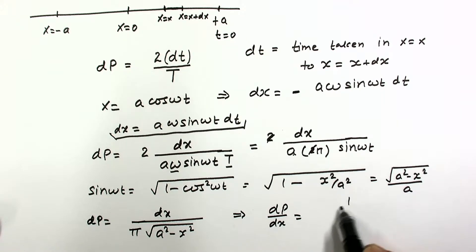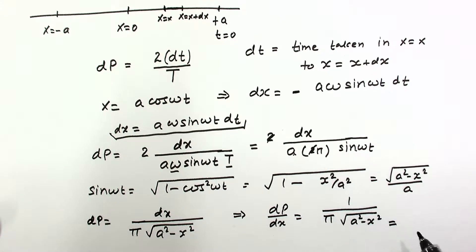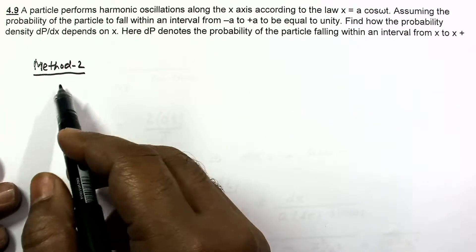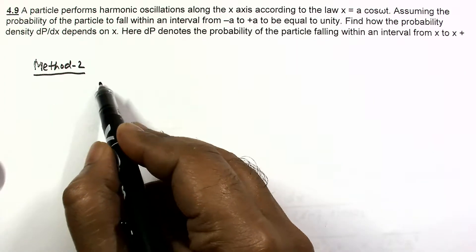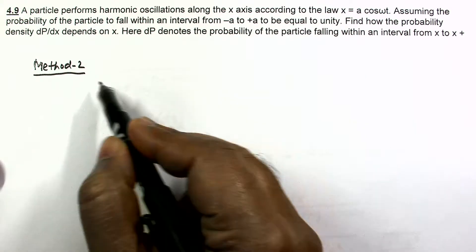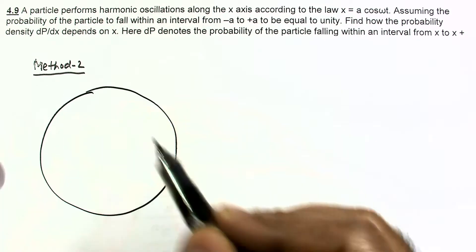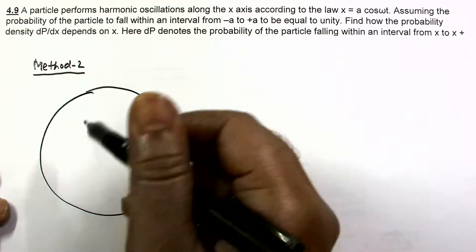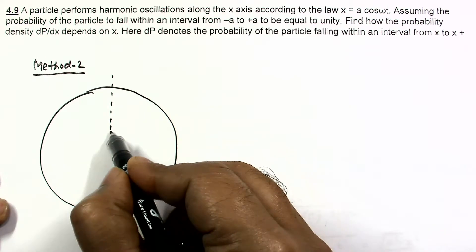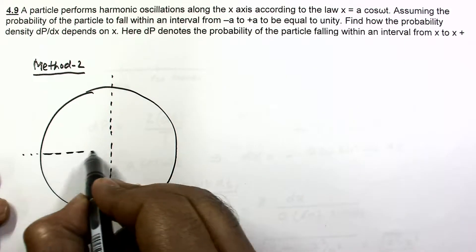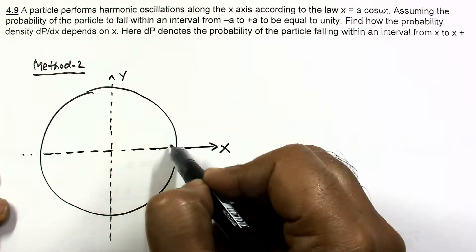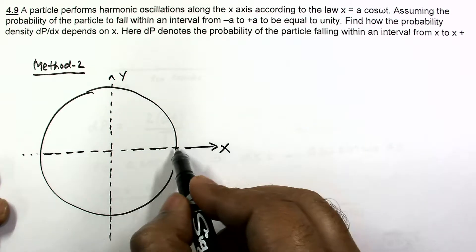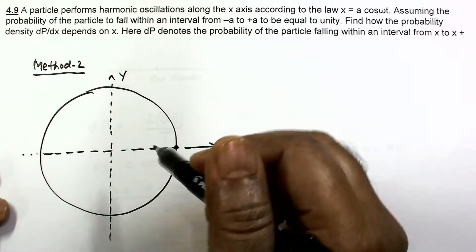So the value of dp/dx equals 1 divided by π·√(a² − x²). This is the required answer to this problem. The same problem can also be solved with another method, in which SHM is treated as the projection of uniform circular motion. Suppose a particle is performing circular motion — its projection on the x-axis can be seen as simple harmonic motion.